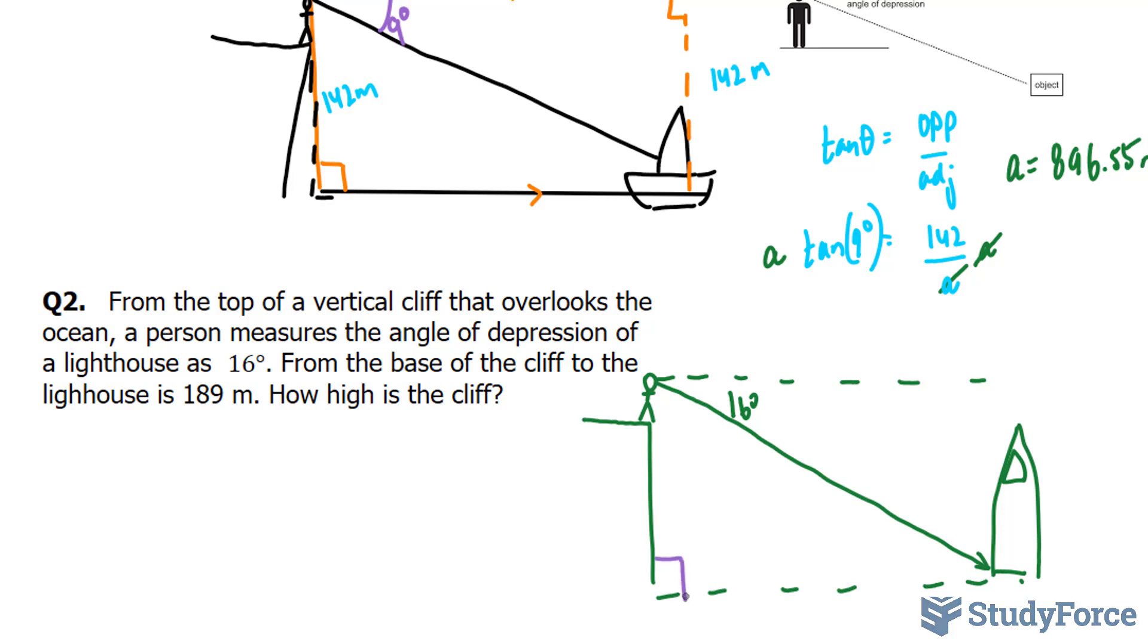So you can kind of observe that this is a right triangle. And of course, if you look at it this way, this is also a right triangle. We are told that from the base of the cliff to the lighthouse is 189 meters. And so therefore, this should also be 189 meters.